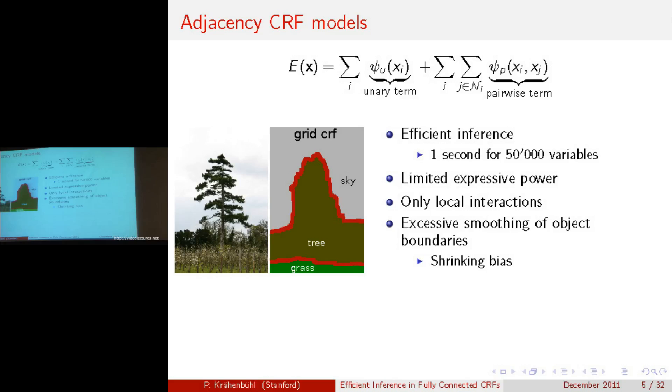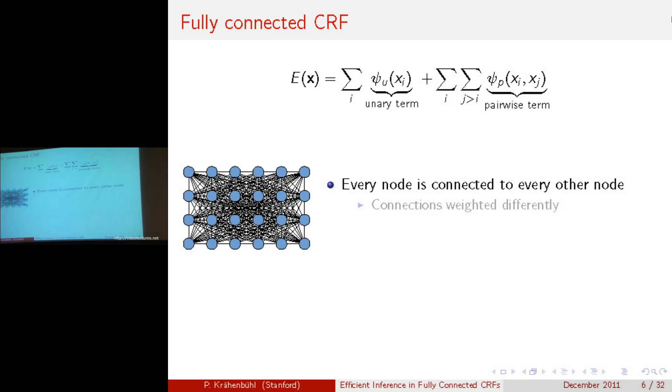What we do in our paper, we use a slightly different CRF model in which every node has a pairwise connection to every other node, and then we simply vary the strength of this connection. It's clear since every node has a connection to every other node, we can model both local interactions as well as very long range interactions between different variables in the image. Just by looking at the image here on the side, you can see that the shrinking bias is no longer a problem.